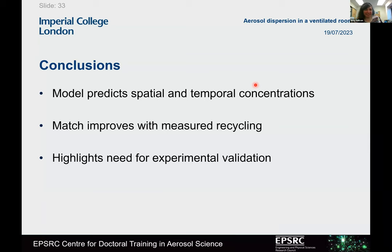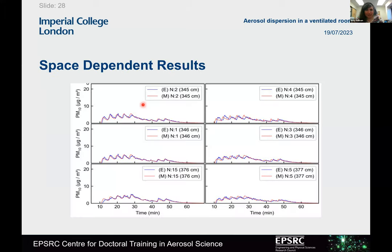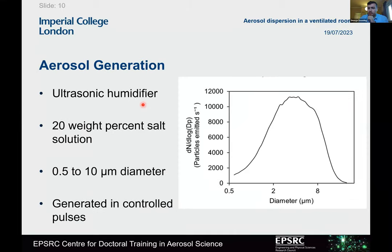Thank you, George, for a great talk — that was perfectly timed. We have a handful of questions here. The first question: what was the size of the aerosol that flew through the room? So, are you asking about the aerosol that was generated? The size distribution produced by the ultrasonic humidifier ranged from 0.5 to about 10 microns — anywhere within that whole range.